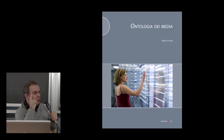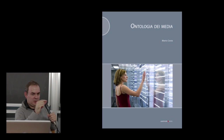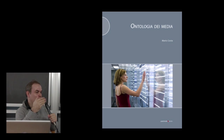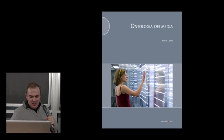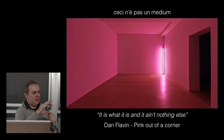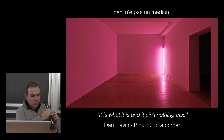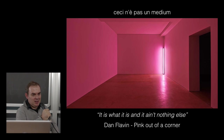One important book that helped me understand what media is: Ontology of Media by Mario Costa, an Italian philosopher. It's a small book — he's a philosopher so sometimes he gets lost in long things, but it was very important for me in thinking about what a medium is. Of course, not all light is a medium. In some cases, as Flavin said, light is what it is and ain't nothing else — it's a pink light coming from a corner, nothing more.